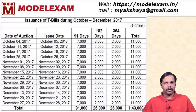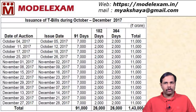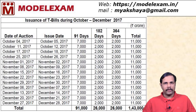The date of auction is October 4th and the issue date, that is the settlement date, is October 5th — that is T+1 settlement basis. This is normally the process of issuing treasury bills and you can check the RBI website, as they will regularly update the issue calendar.